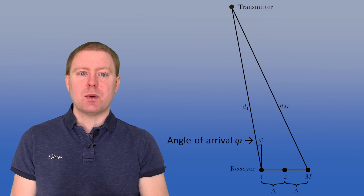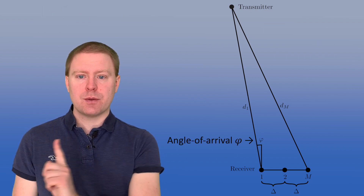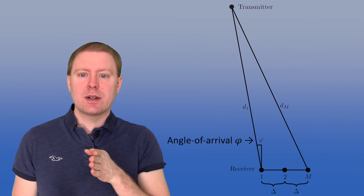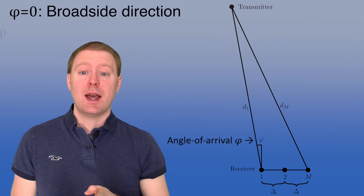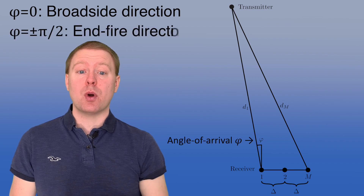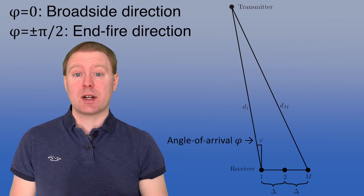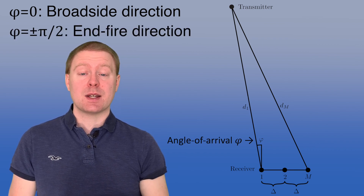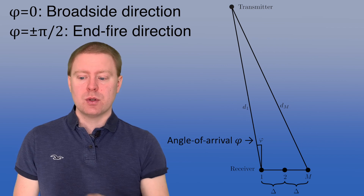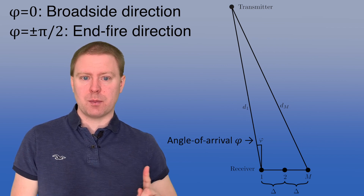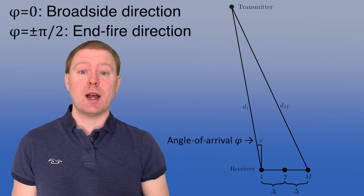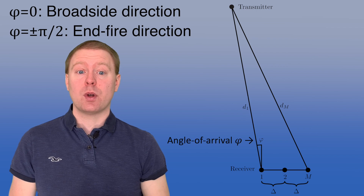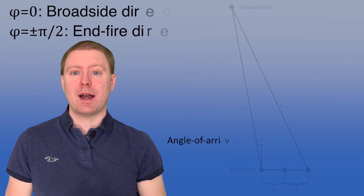When phi equals zero, the transmitter is located perpendicularly to the array, and we call this the broadside direction. When phi equals pi over two or minus pi over two, the transmitter is along the line of the array, and we call that the end-fire direction.